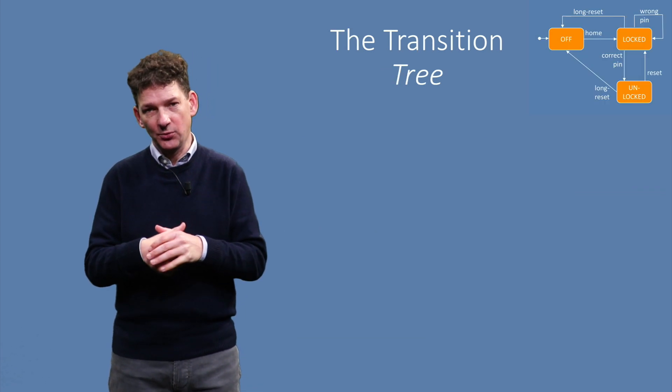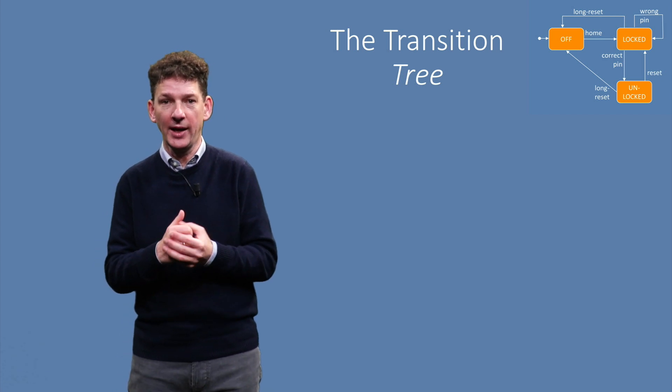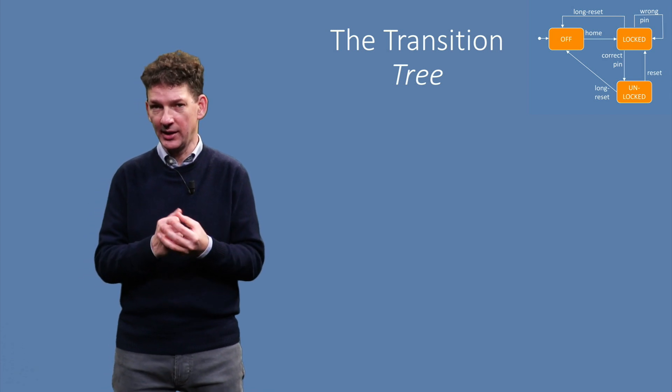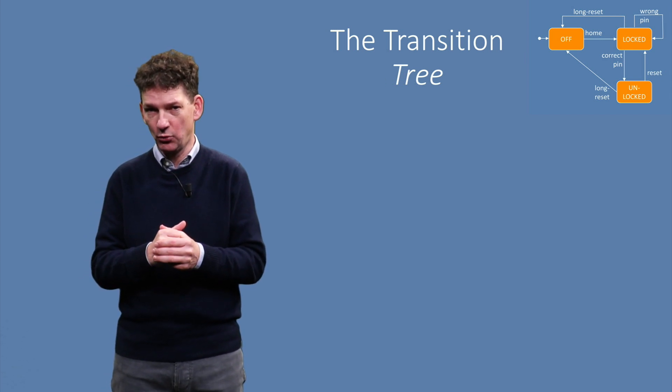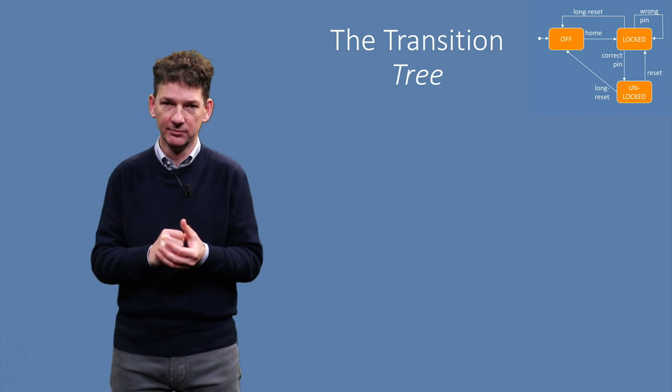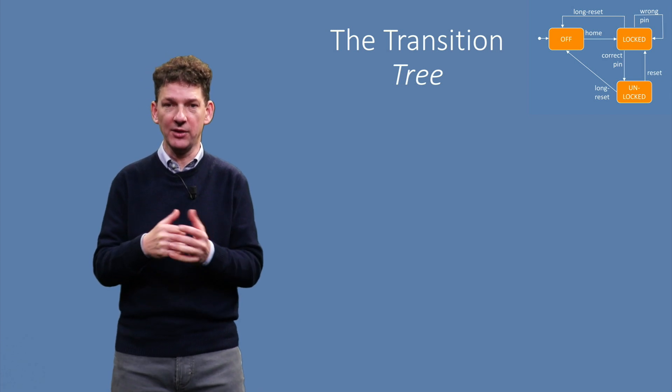A full test case will typically cover a sequence of transitions. That is, it will exercise a path through the state machine. As there are potentially infinitely many paths, we will need some approach to decide which paths to exercise. Our way to do that is by creating a transition tree, which spans the graph.